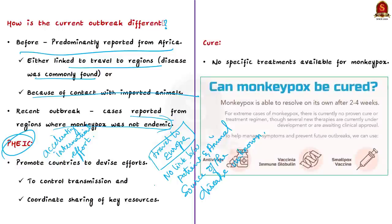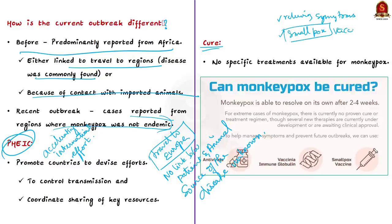Regarding current prevention and treatment options against monkeypox — there are no specific treatments available as of now. Clinical management includes relieving symptoms, managing complications, and preventing long-term effects. It is currently not understood whether a previous monkeypox infection provides immunity against future infections. Given the genetic similarities between smallpox and monkeypox viruses, it is believed that vaccines and antiviral agents used for worldwide eradication of smallpox can also protect against monkeypox. The WHO reports that vaccination against smallpox is approximately 85% effective in preventing monkeypox, and studies are being conducted to evaluate this.